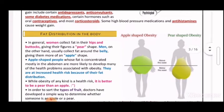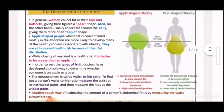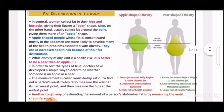Now let's consider where excessive fat is stored in the body — whether it goes anywhere or accumulates in specific locations. In general, women collect fat in the hips and thighs, giving them a pear-shaped appearance.